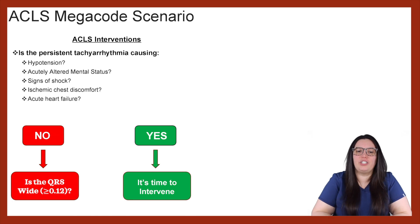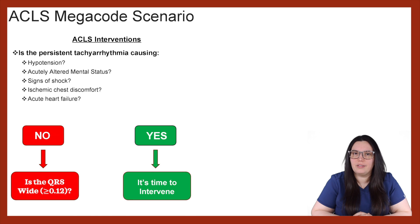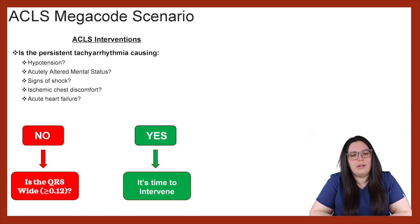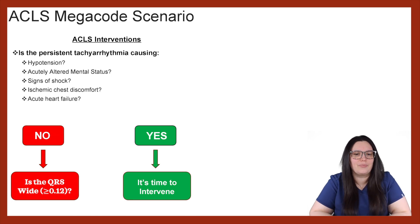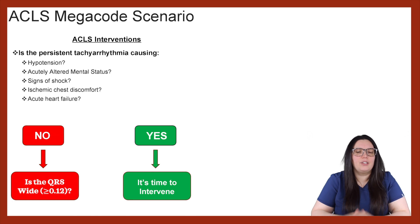Once we start those interventions, we need to see if this is a persistent tachyarrhythmia causing other symptoms. Is the patient hypotensive? The patient's blood pressure is fine, so there's no hypotension present. Does the patient have any acutely altered mental status? When you ask your questions, they're going to be alert and oriented times 4, so that is not taking place. Is there any signs of shock? The patient does have a rapid pulse, but there are no other symptoms, so it doesn't seem like the patient is in shock. Is there any ischemic chest discomfort? The patient denies. And lastly, is there any acute heart failure? Not likely — the patient has no history and is not exhibiting any signs. So we can effectively say that none of these things are taking place.